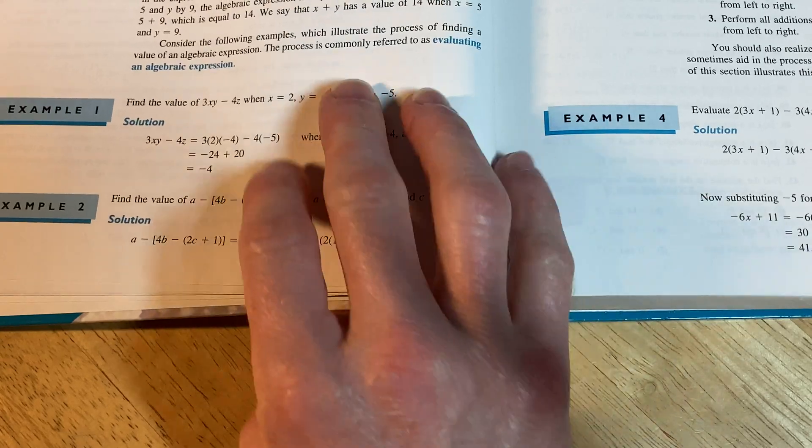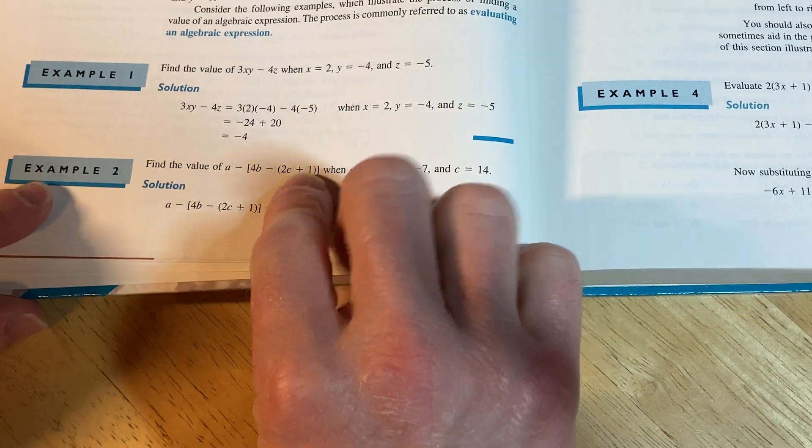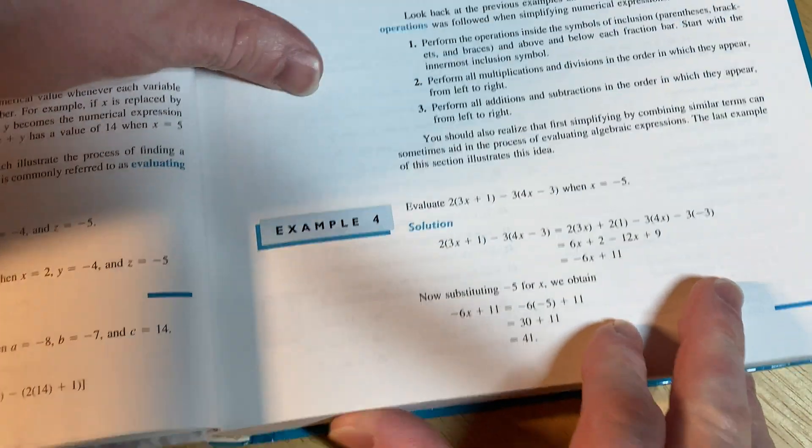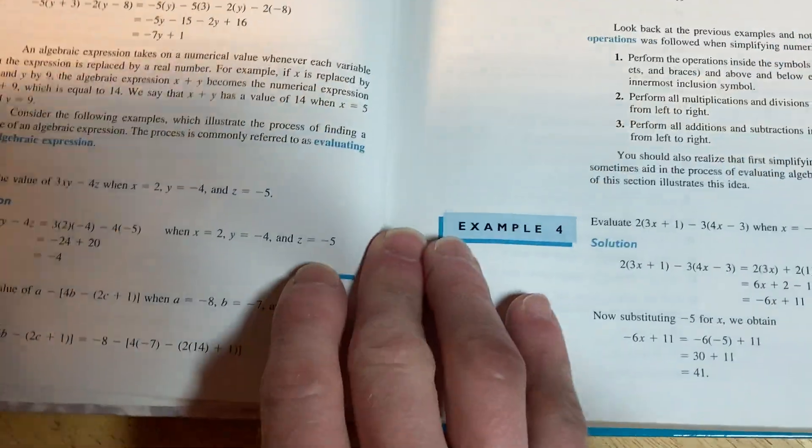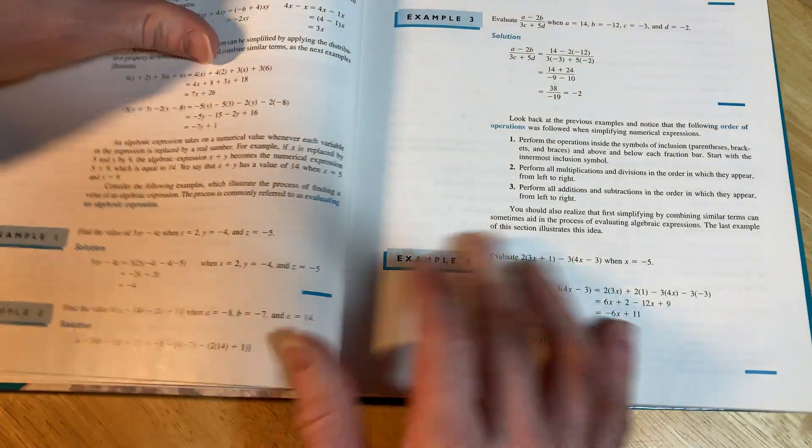And this is a nice book because it has really nice examples and there's a lot of them. For example, here you have example one, two, three, four, quite a few examples, right? And then you have some exercises. So it gets right to the point. It's like, here's some stuff you should know, here's some examples, here's some exercises. Rinse and repeat.